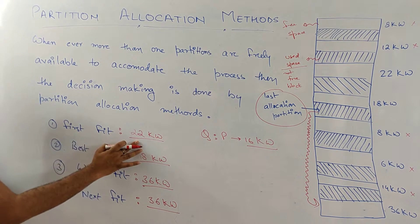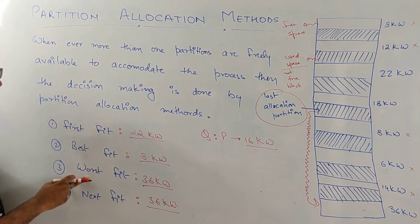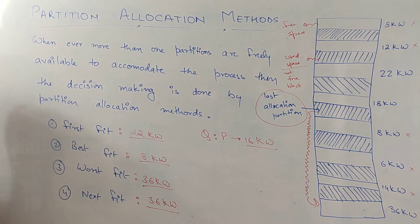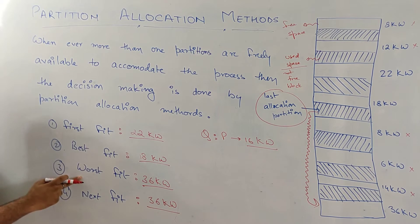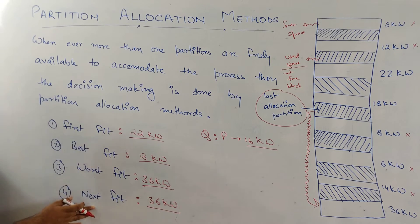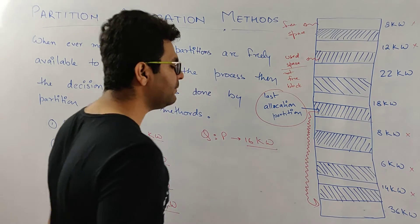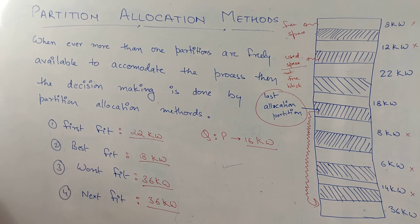So these are the answers. For first fit, the 22k word block is used. For best fit, the 18k word block is used. For worst fit, the 36k word block is used. For next fit, the 36k word block is also used. In summary: first fit uses the first sufficient block, best fit uses the block with minimum free space, worst fit uses the block with maximum free space, and next fit starts scanning from the last allocated partition.